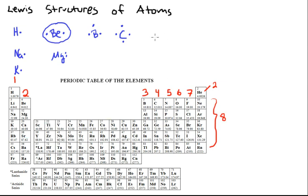For nitrogen, there will be five valence electrons, 1, 2, 3, 4, 5.